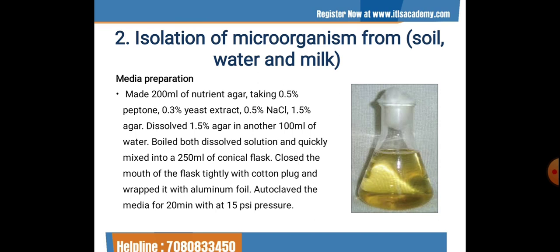Dissolve 1.5% agar in another 100 ml of water, boil both dissolved solutions, and quickly mix them into a 250 ml conical flask. Close the mouth of the flask tightly with a cotton plug and wrap it with aluminium foil. Autoclave the media for 20 minutes at 15 psi pressure in an autoclave machine until sterilization is properly done.